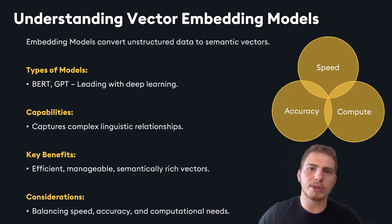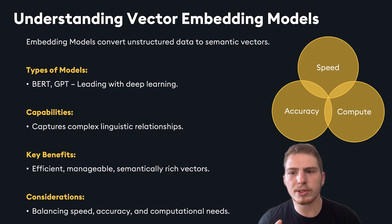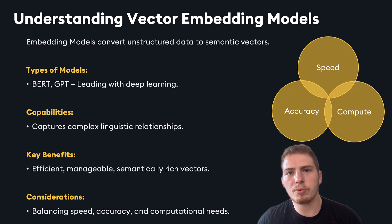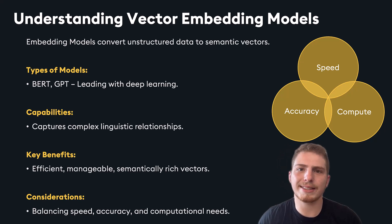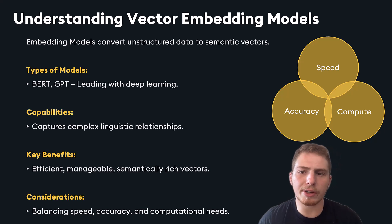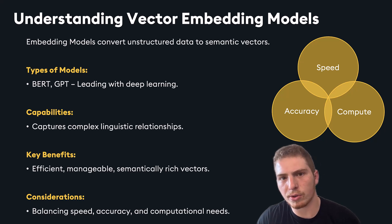As you increase the number of dimensions, accuracy increases but so does your speed and compute cost. If you're limited in latency and compute, you might want to choose an embedding model with fewer dimensions, say 700. On the other hand, if your main priority is accuracy, an embedding model with over 1,000 dimensions might get you better results.